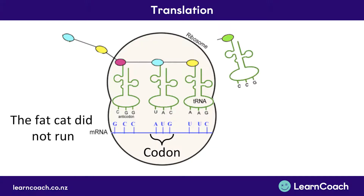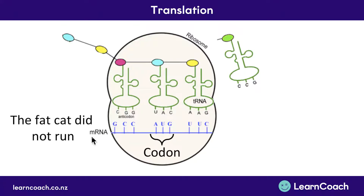A helpful example would be: 'the fat cat did not run.' Each letter is like a letter of a base pair, and the words together are like the codons. The body reads the words just like we do — it doesn't read each base pair individually, the same way we don't read each letter individually. We don't spell out T-H-E-F-A-T-C-A-T. We just read it as groups of three.